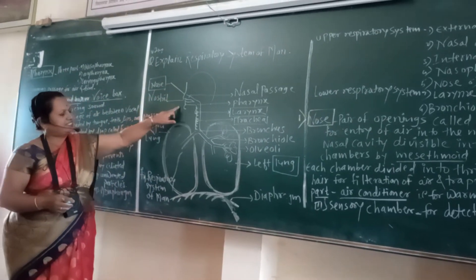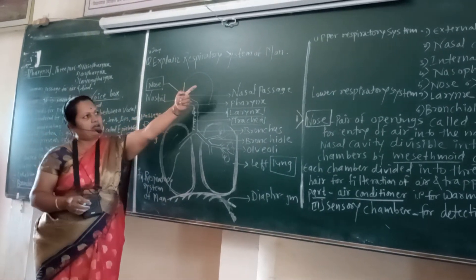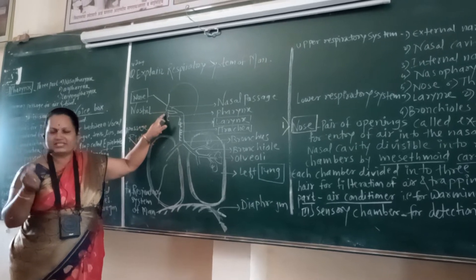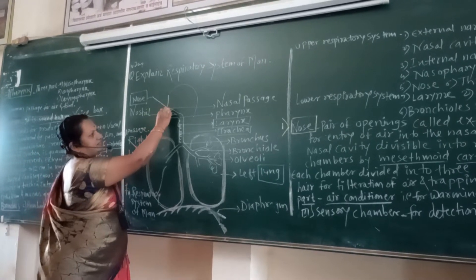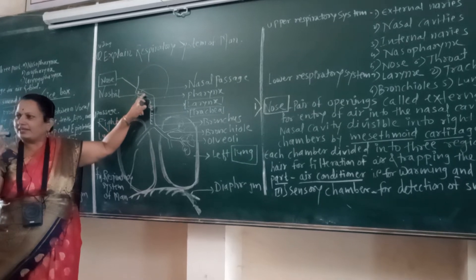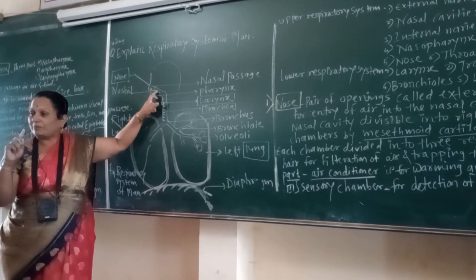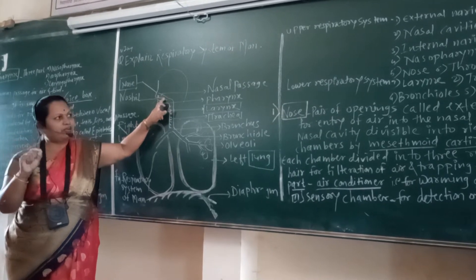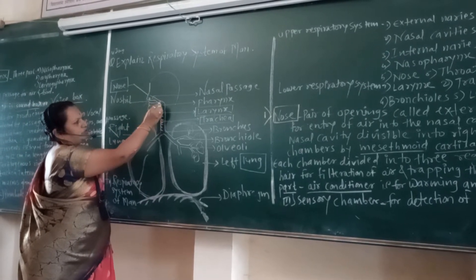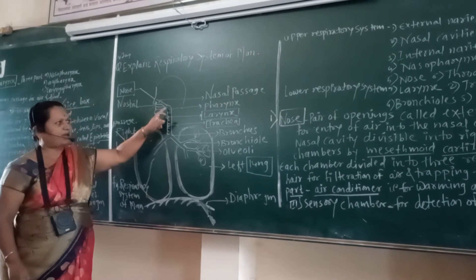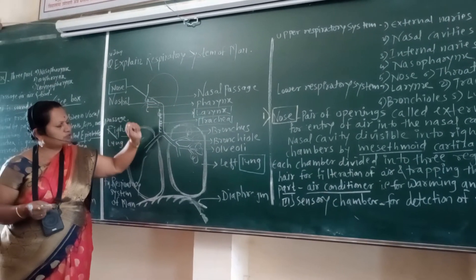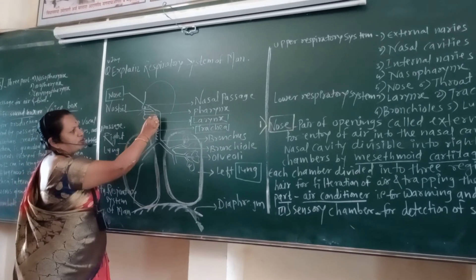The thoracic cage gives protection to the most important organs like lungs, heart, and liver. The respiratory system of man mainly consists of an external or upper respiratory system having external nares — that means openings. Two openings are present through which air enters. Then there is a nasal passage or nasal cavity. Air from the nose and food from the mouth enters into the pharynx.